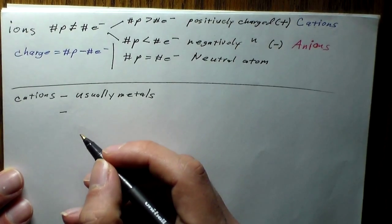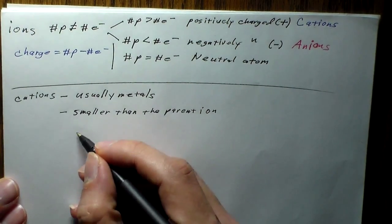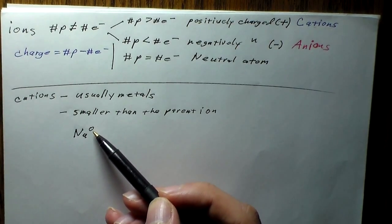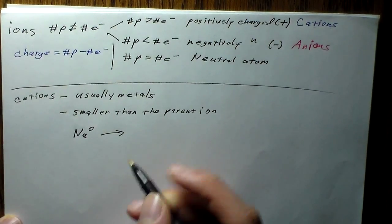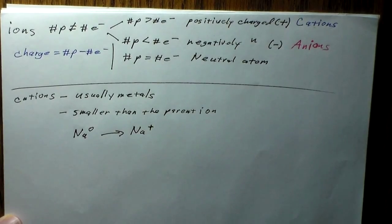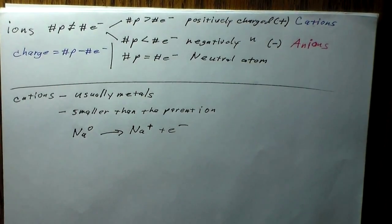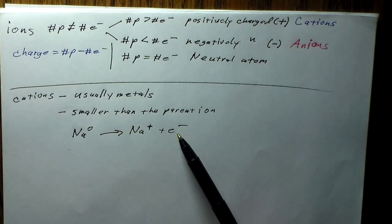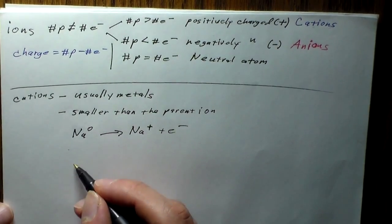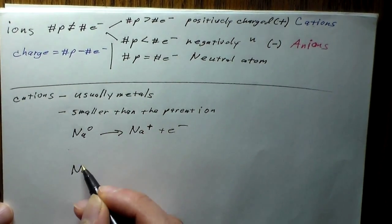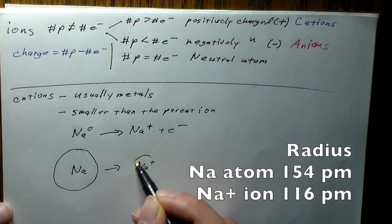Cations are going to be smaller than the parent atom. For example, take sodium metal — we write the superscript zero to show it has no charge, so it's the neutral metal itself. We can ionize this to get a sodium ion with a plus charge, meaning it's lost its electron. The electron is released to balance the charges. The sodium atom starts relatively large, but once it becomes the sodium ion, it's going to shrink up a little bit.